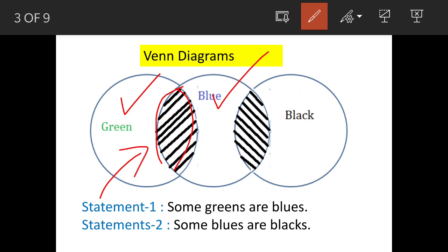Then we draw another circle for blacks and we overlap them here. So, this becomes our statement 2. Now, we will analyze this Venn Diagram further.